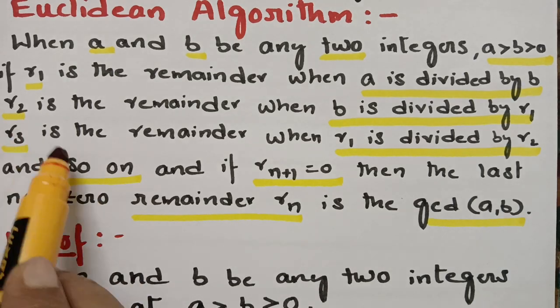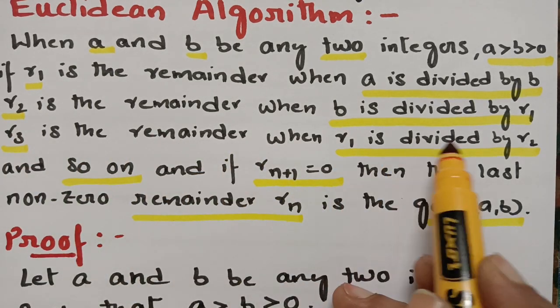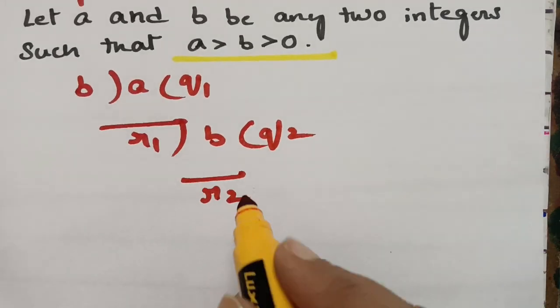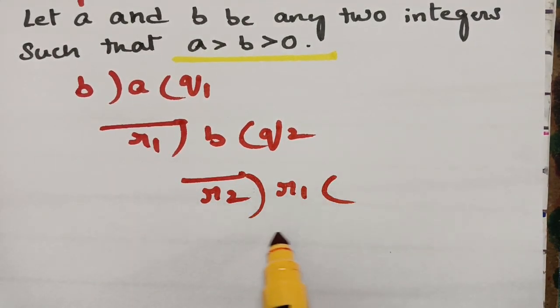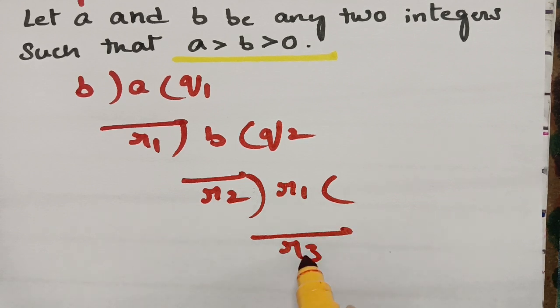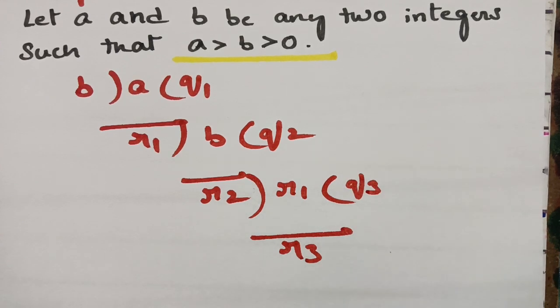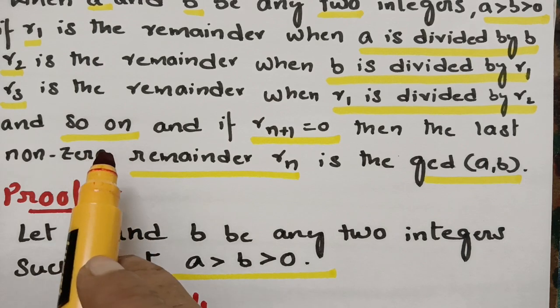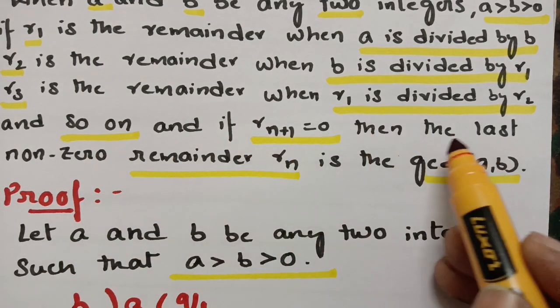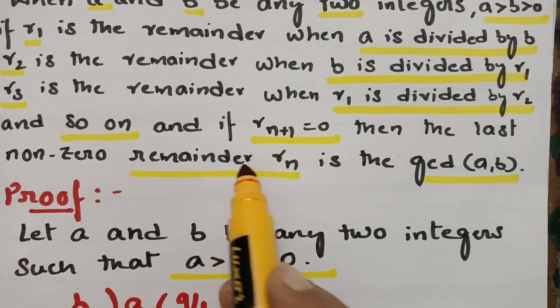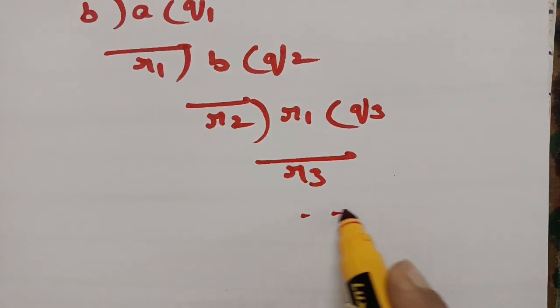R3 is the remainder when R1 is divided by R2, with Q3 as the quotient. And so on — if you divide like that and Rn+1 equals 0, then the last non-zero remainder Rn is the GCD of A and B.